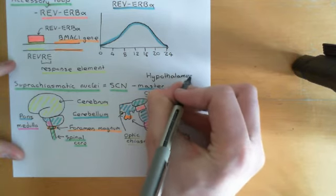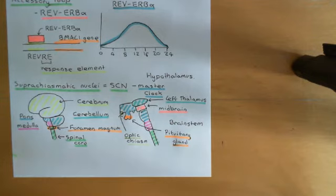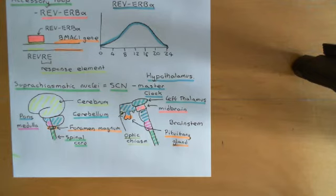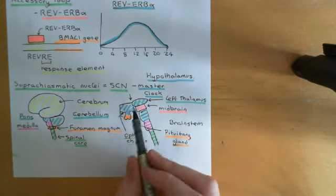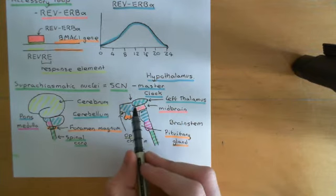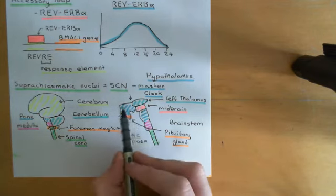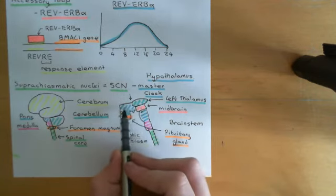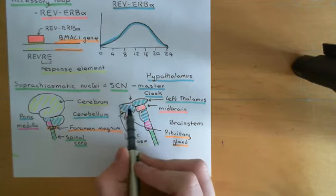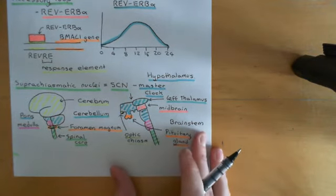To get a better perspective, we need to draw another picture looking from above rather than from the left-hand side. This will also help us understand that there is a left thalamus and a right thalamus. When viewed from above, the hypothalamus is not just one solid lump sitting in front of the midbrain. In fact, it has a hollow cavity inside it that splits it into a left and a right-hand side.